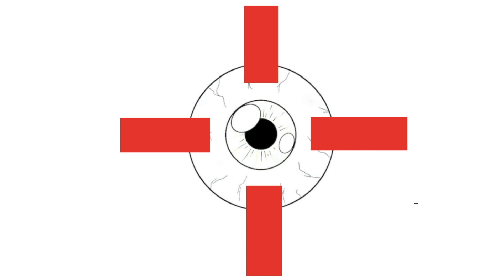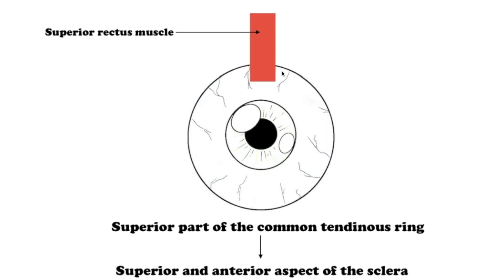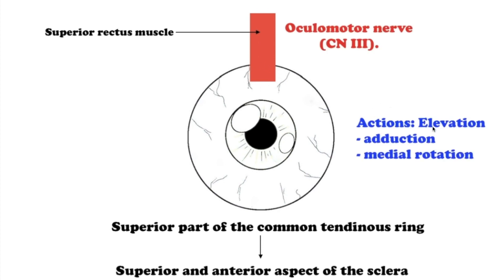The first muscle is the superior rectus muscle. This muscle originates from the superior part of the common tendinous ring and attaches to the superior and anterior aspect of the sclera. The main movement is elevation; it also contributes to adduction and medial rotation of the eyeball. It is innervated by the oculomotor nerve.